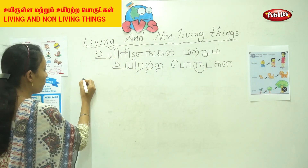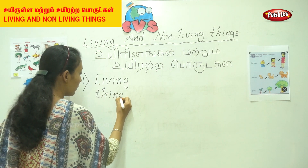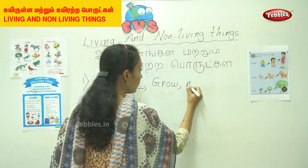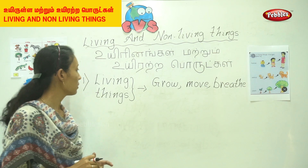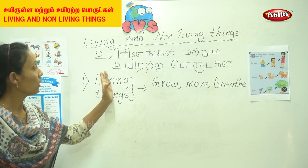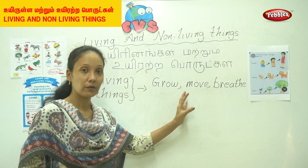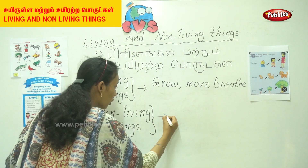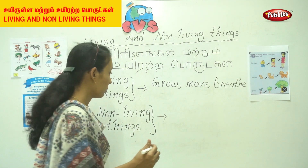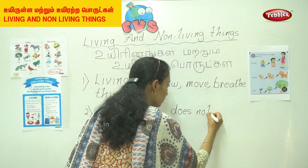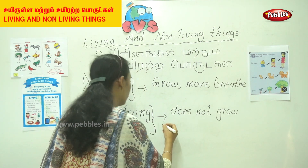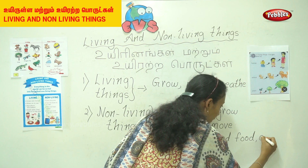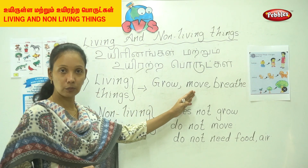Living things: the living things grow, move, and breathe. So the living things grow, then move from one place to another, and also they will breathe. Non-living things — they do not grow, they do not move from place to place.